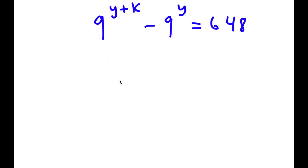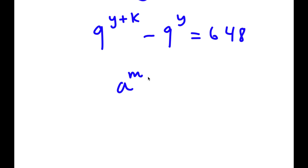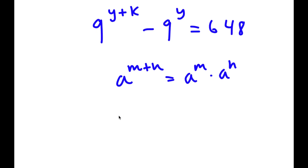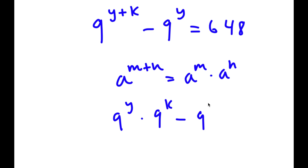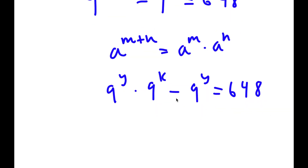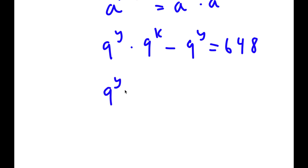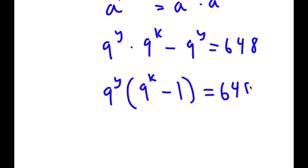Using the rule that a to the power of m plus n equals a to the power of m times a to the power of n, 9 to the power of y plus k becomes 9 to the power of y times 9 to the power of k. So I have 9 to the power of y times 9 to the power of k minus 9 to the power of y equals 648. Now I factor out 9 to the power of y to get 9 to the power of y times (9 to the power of k minus 1) equals 648.